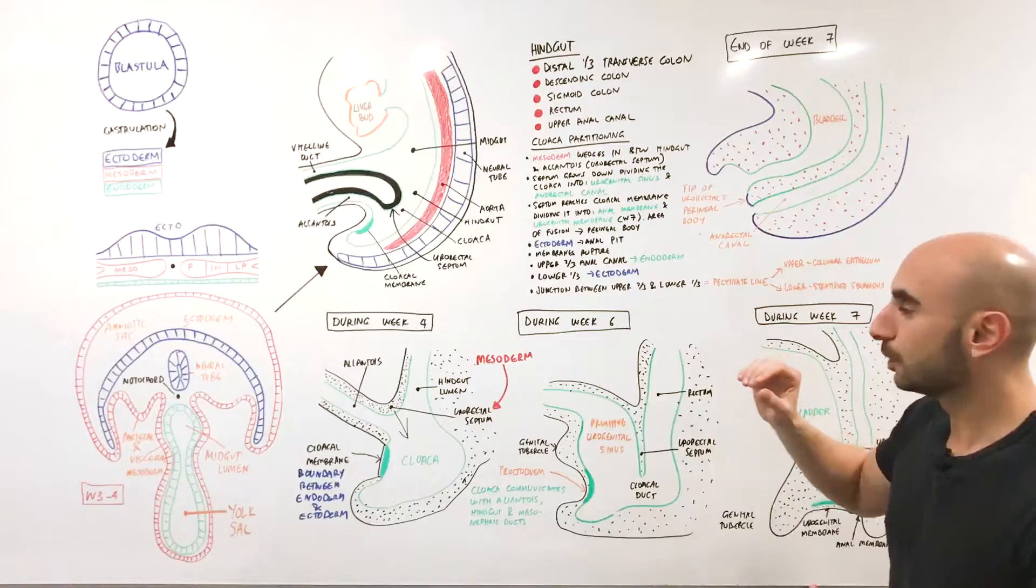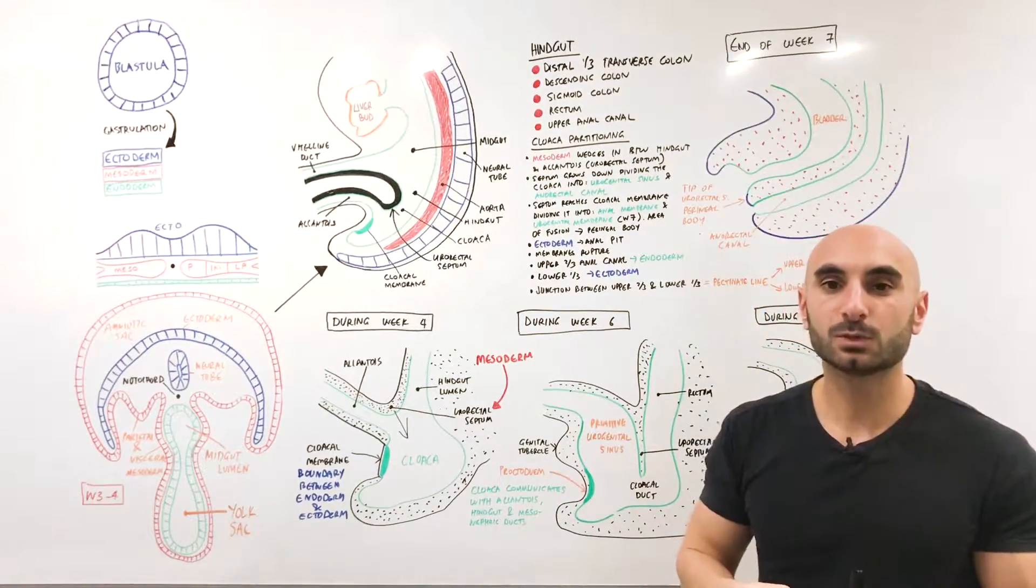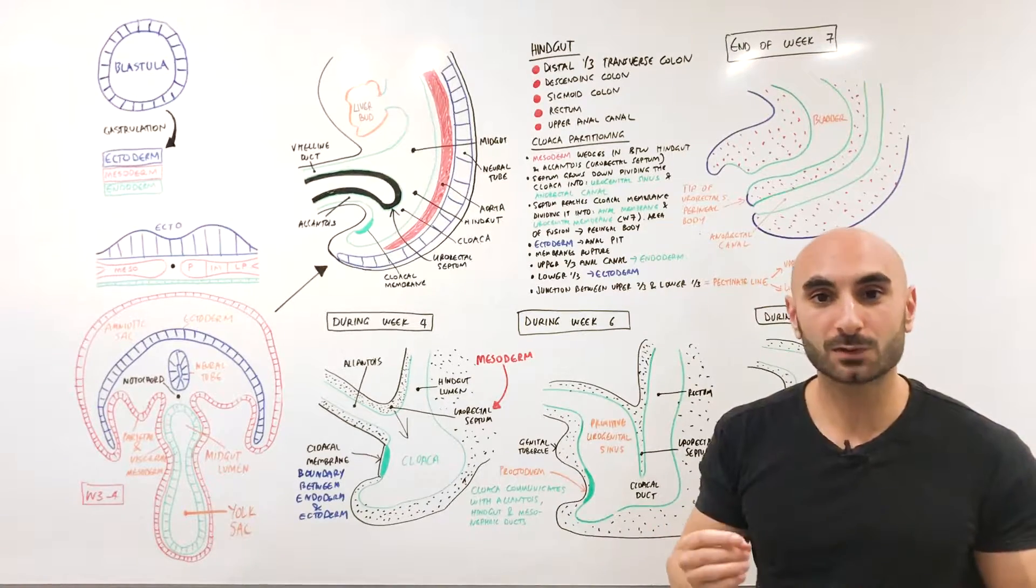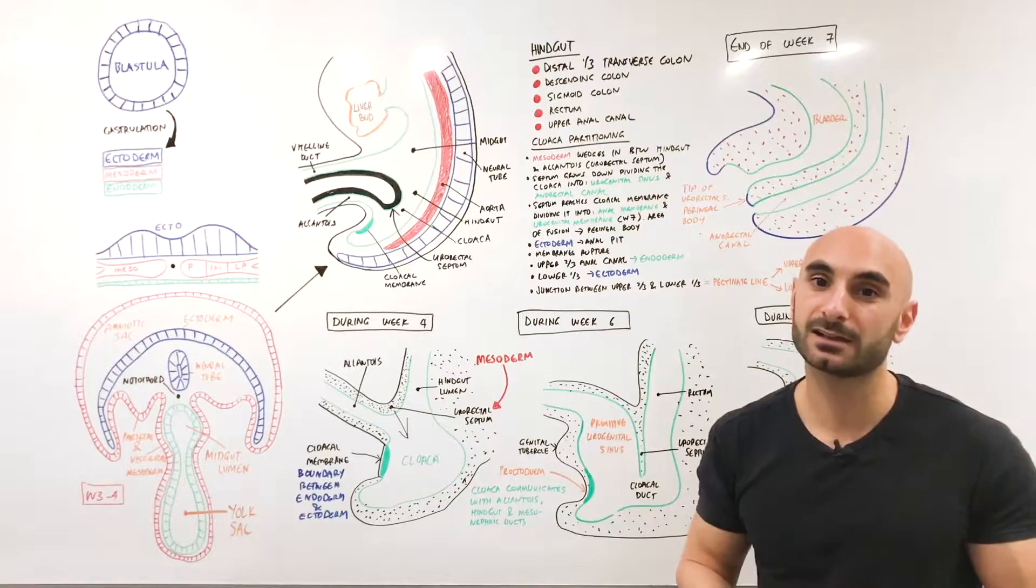But the lower third of the anal canal, since it's ectoderm, will get its blood from the inferior rectal arteries, which are from the pudendal arteries, from the internal iliac arteries.